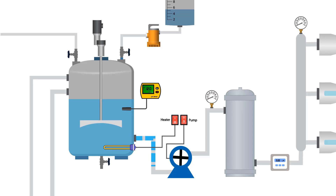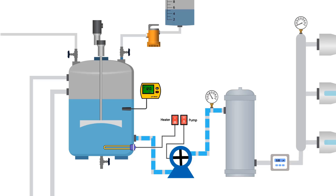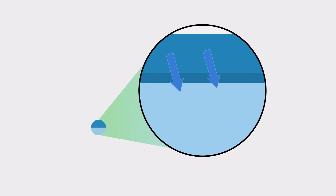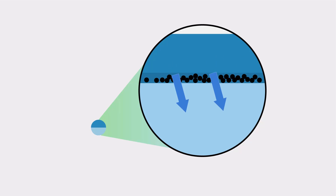Run the pump to transfer the prepared solution to the micron cartridge filter. This filter allows fluids smaller than 5 microns to pass through while blocking particles larger than 5 microns, functioning as a sieve.